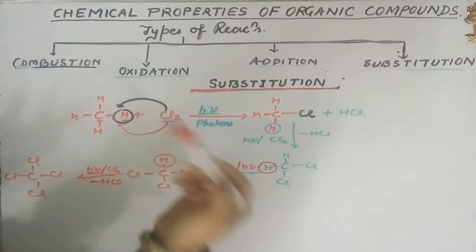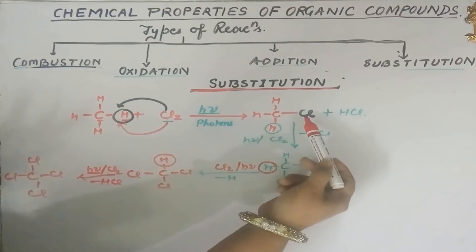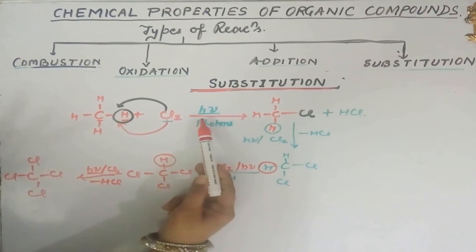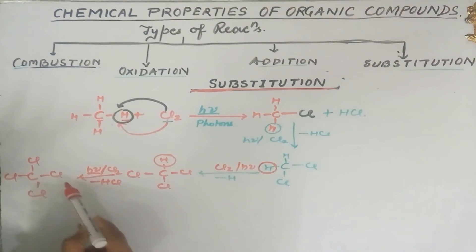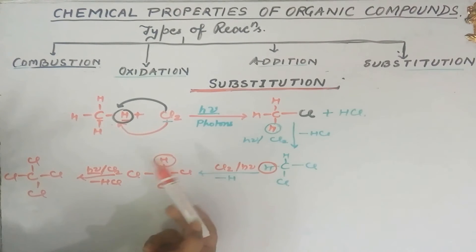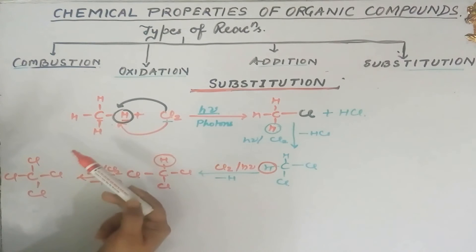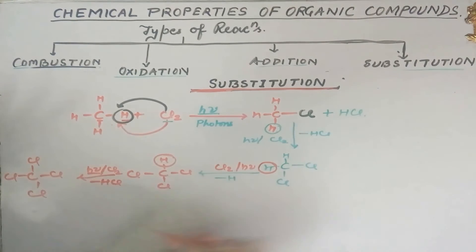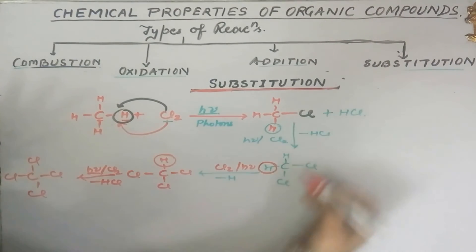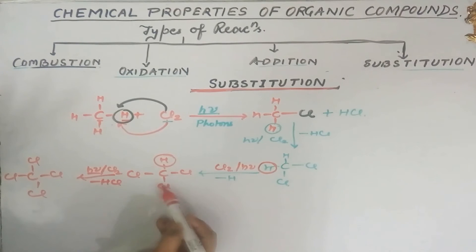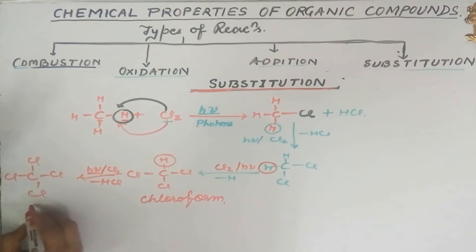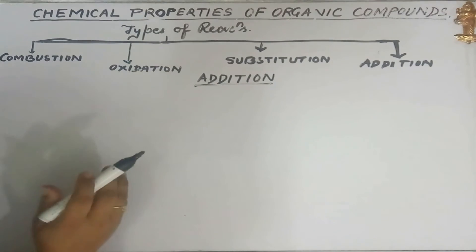All four hydrogens in methane are replaced one by one by chlorine atoms in the presence of sunlight or diffuse sunlight. The products formed are: monochloromethane (CH3Cl), dichloromethane (CH2Cl2), trichloromethane (CHCl3) — also known as chloroform — and tetrachloromethane (CCl4). This reaction, where one atom is replaced by another, is known as substitution reaction, and it is given by saturated hydrocarbons.